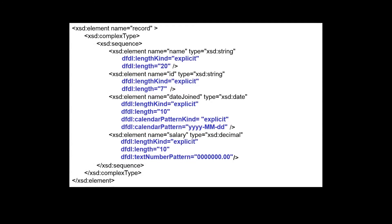Here we see the DFDL short form annotations for all the elements in the sequence. The DFDL properties specify that each element has an explicit length and define the length of the element. The date joined element has additional DFDL properties that specify the date format, and the salary element has additional DFDL properties that specify the number format.